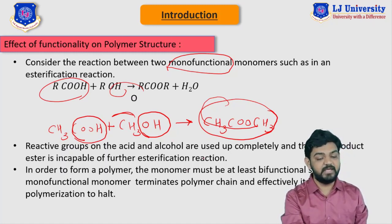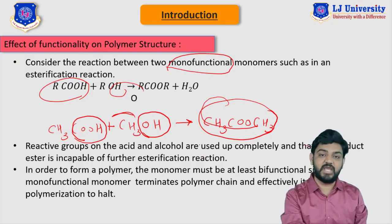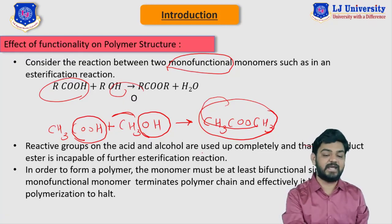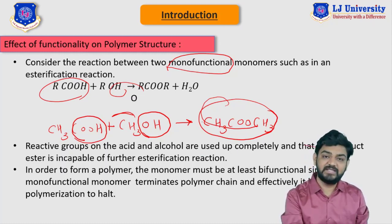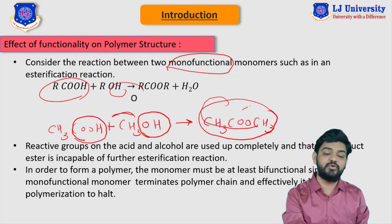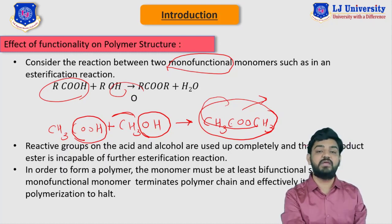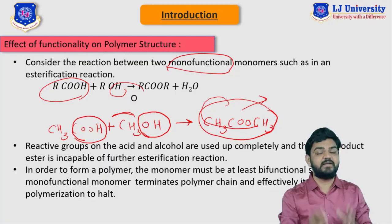Hence, monofunctional monomers are not used in polymerization reactions. In order to form a polymer, the monomer must be at least bifunctional so that we can have a continuous chain. Since monofunctional monomers terminate the polymer chain, they effectively bring the polymerization reaction to a halt. This was all about the effect of functionality on the polymer. We will see you in the next video — till then, keep watching and keep learning, thank you.